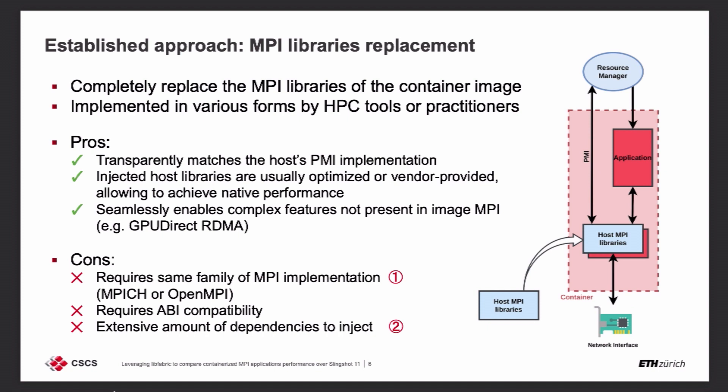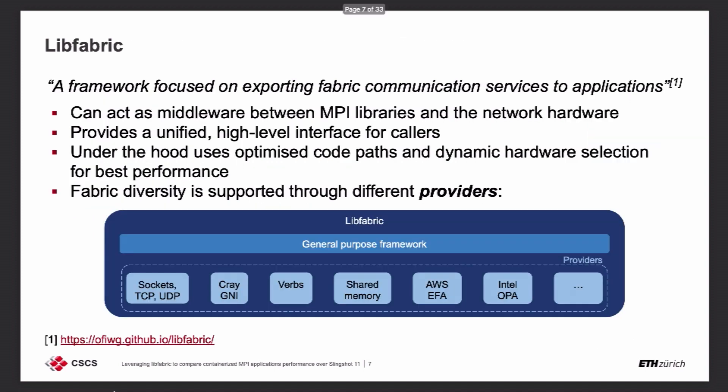We started looking around to improve the situation, and eventually we turned to libfabric. If you're not familiar with it, libfabric defines itself as a framework focused on exporting fabric communication services to applications. For our purposes, it can act as a middleware between MPI libraries and the network hardware. On the upside it provides a unified interface for callers, while internally it uses optimized code paths and dynamic hardware selection — depending on the hardware available, it tries to pick the best fabric for your process.